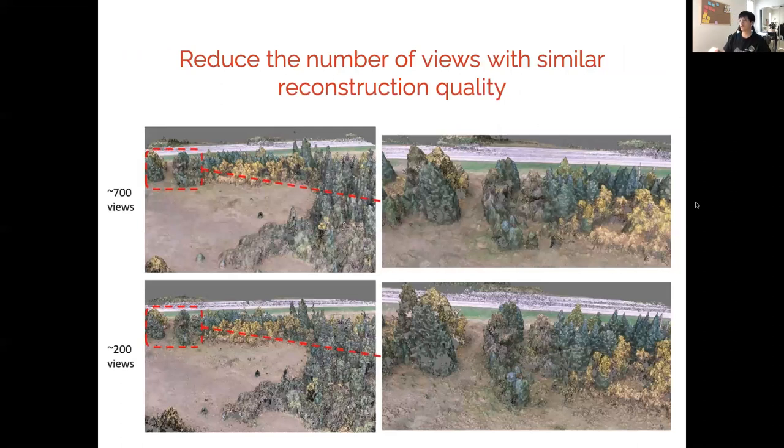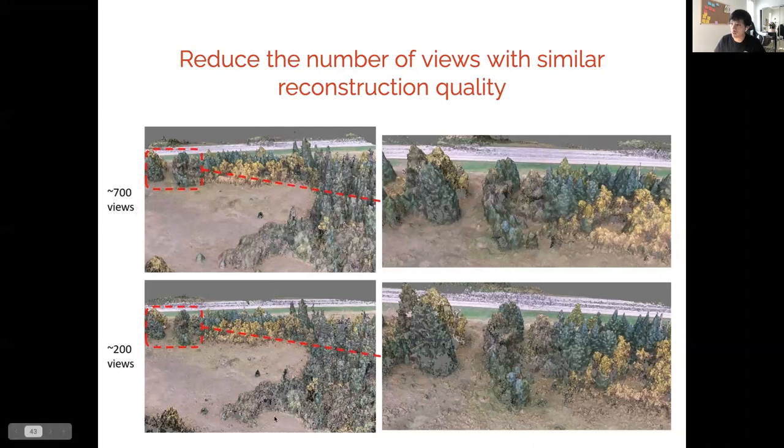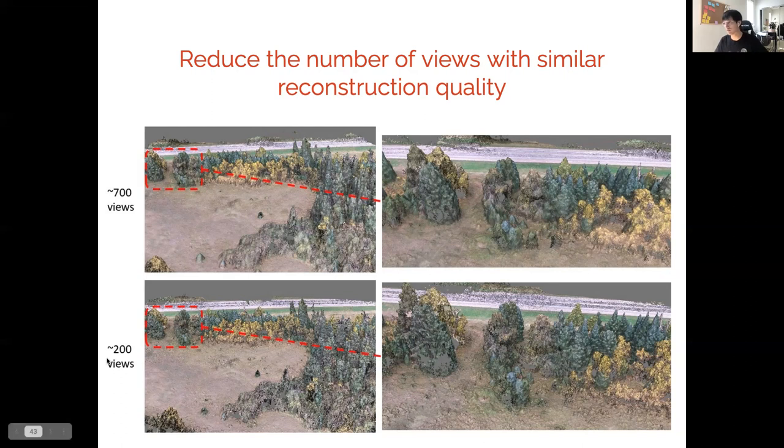Here are some results. On the top, we select 700 views by equally sampling our trajectory every second. The reconstruction quality is very high. However, it requires a large number of views, and this processing takes about 12 hours on our computer. At the bottom, using our methods, we only extract around 200 views, which takes about an hour to process to make this dense reconstruction. You can see the reconstruction quality is very similar.